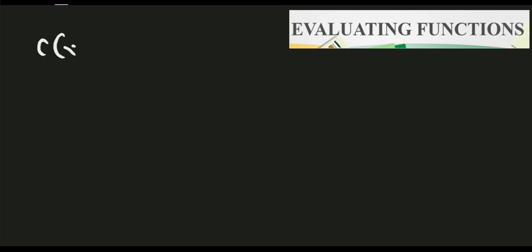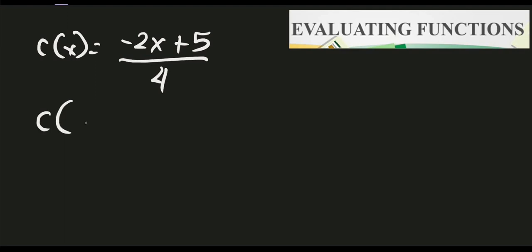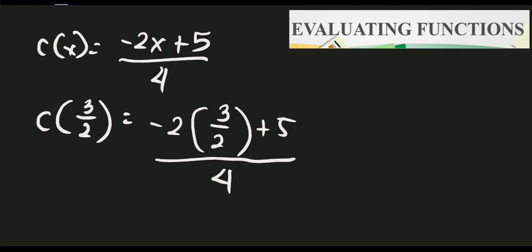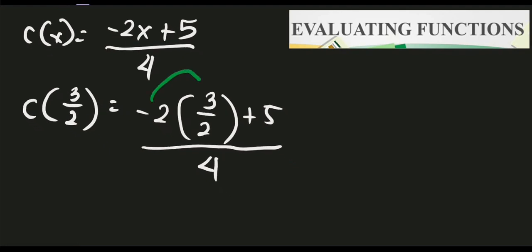We have c of x equals negative 2x plus 5, all over 4. The input is 3 over 2. By replacing x with 3 over 2, we get negative 2 times 3 over 2 plus 5, all over 4. Simplify: negative 2 times 3 is negative 6 over 2, plus 5, all over 4.